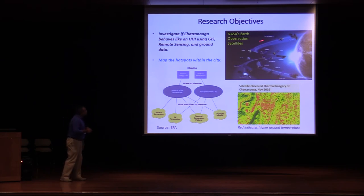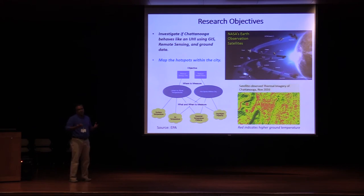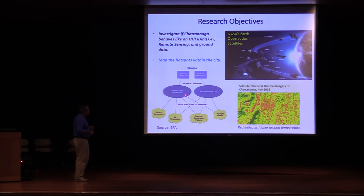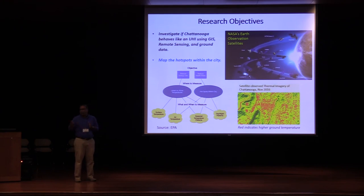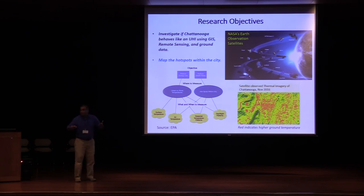Here you can see a list of observation satellites operated by NASA, and we can get all the data we need from there at free of cost. Here you can see a framework developed by EPA on studying urban heat island impact. And here is an image I recently acquired myself — just exploring how Chattanooga is behaving. You can already see that the red area indicates higher ground temperature, so it is already behaving like a heat island. But we need to process a large number of seasonal and historical images to confirm it.